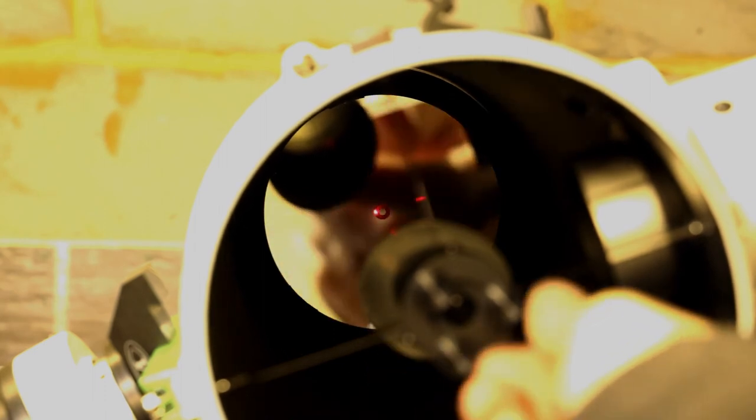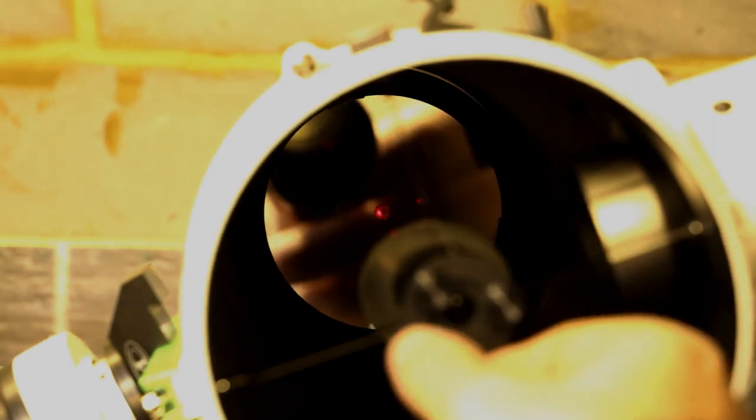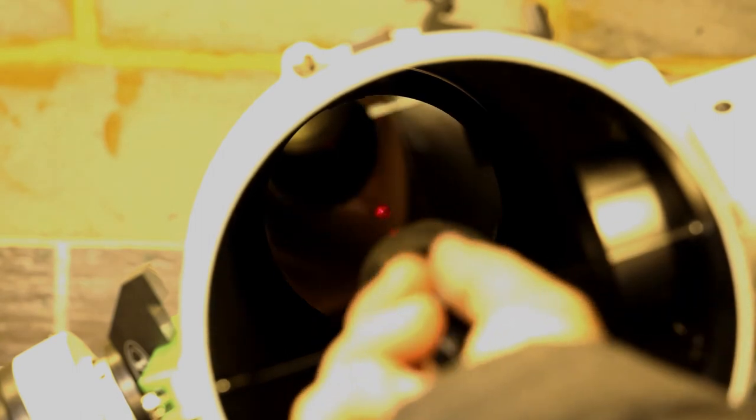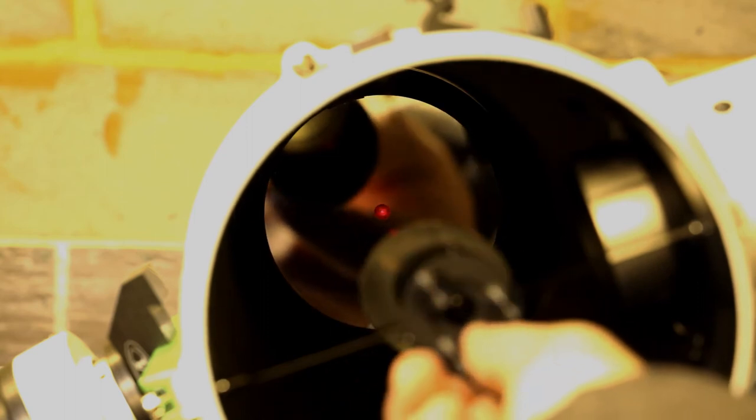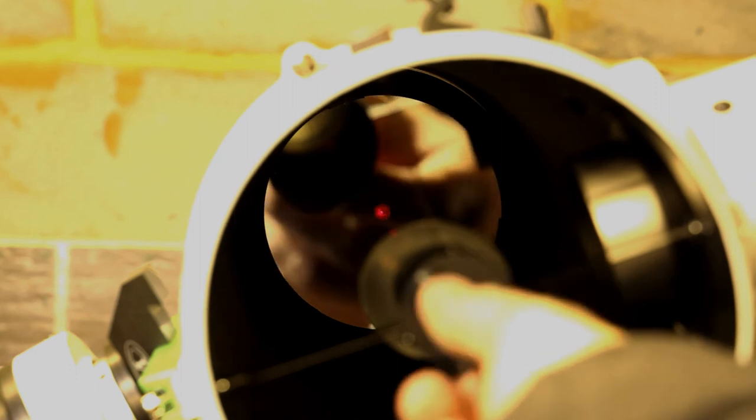So proceed by making very small turns of these screws. Undoing one first and then slightly tightening up the slack with the other two. And just move the laser around and you want to get the point in the dead centre of that small circle on the primary mirror.